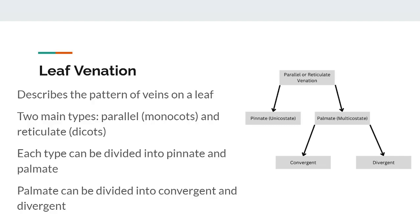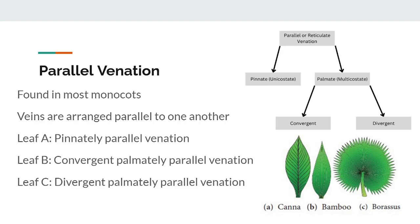Leaf venation describes the patterns of visible veins, or vascular bundles, on the blade of a leaf. Note that there are many systems with varying names for different venation patterns. I will go over the most common system, in which there are two main venation patterns: parallel, which is found in most monocots, and reticulate, which is found in most dicots. As you can see in this flowchart, each main type of venation can be divided into pinnate and palmate venations, also called unicostate and multicostate venations, and the palmate venation can also be divided into convergent and divergent. In pinnately parallel venation, a single midvein runs from the base to the apex of the blade, with smaller secondary veins that branch off of that midvein, much like the feather of a bird.